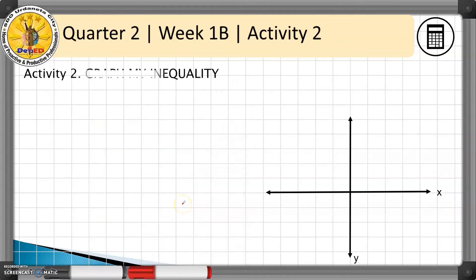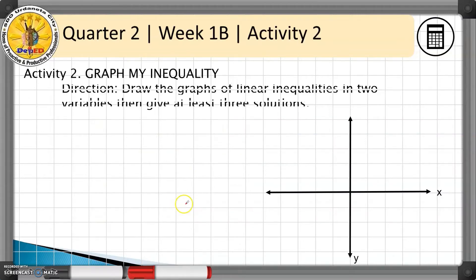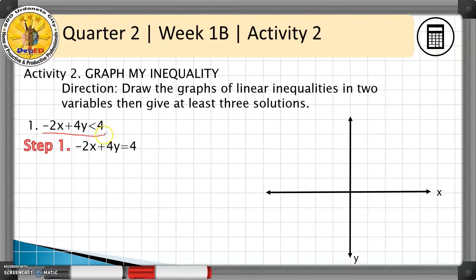Let's have the second activity: graph my inequality. We'll draw graphs of linear inequalities in two variables and give at least three solutions. We have the inequality -2x + 4y < 4.